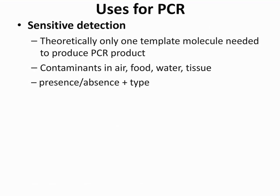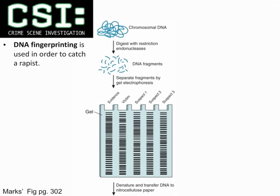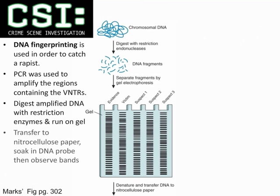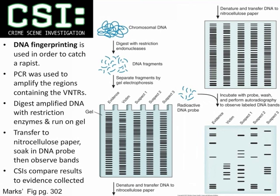Learning objective ten covers uses of PCR and DNA fingerprinting in crime scenes. PCR uses include sensitive detection, medical diagnostic tests, forensic detection, and genotyping. For DNA fingerprinting to catch a criminal, PCR is used to amplify the regions, then run on an agarose gel using gel electrophoresis, transferred to nitrocellulose paper to observe bands, and results are collected to compare evidence. In the example gel shown, Suspect 2's bands match the evidence, making Suspect 2 the perpetrator.